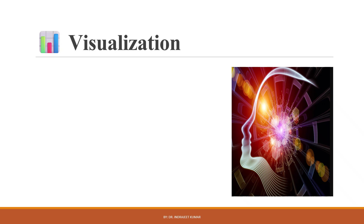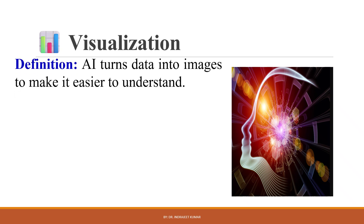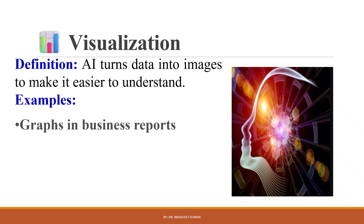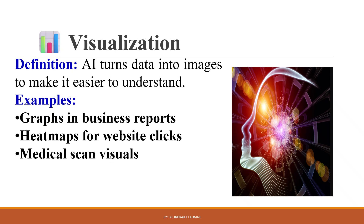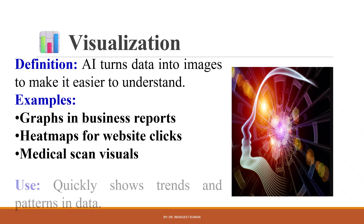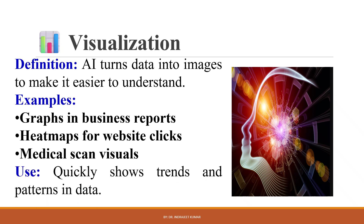Visualization means turning raw data into clear visuals like graphs, charts, mind maps or 3D models. AI turns data into images to make it easier to understand. Examples include graphs in business reports, heat maps for website clicks, and medical scan visuals. This quickly shows strengths and patterns in the data.